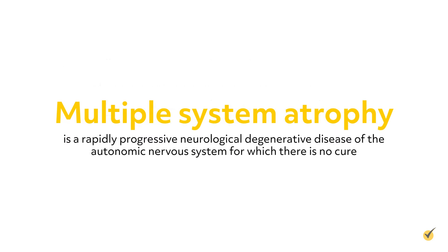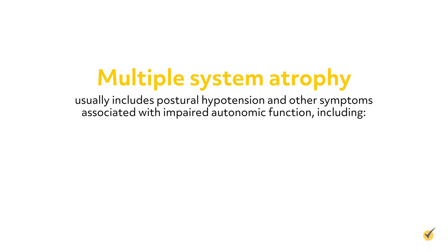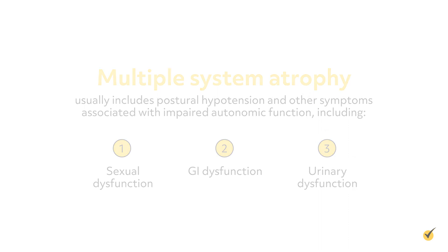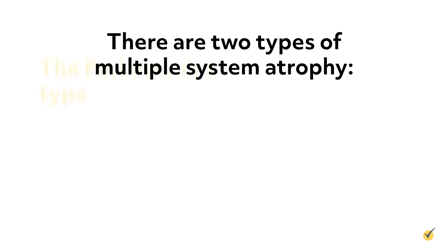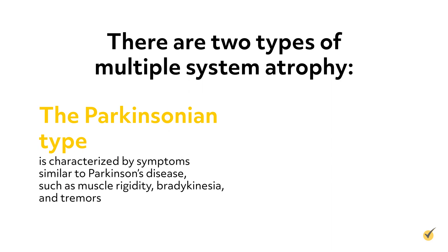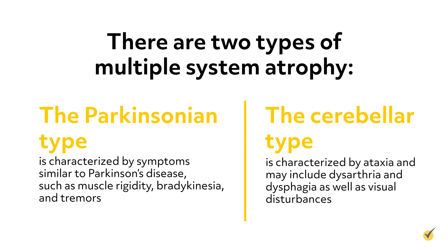Multiple-system atrophy is a rapidly progressive neurological degenerative disease of the autonomic nervous system for which there is no cure. It usually includes postural hypotension and other symptoms associated with impaired autonomic function, including sexual dysfunction, GI dysfunction, and urinary dysfunction. There are two types of multiple-system atrophy. The Parkinsonian type is characterized by symptoms similar to Parkinson's disease, such as muscle rigidity, bradykinesia, and tremors. The cerebellar type is characterized by ataxia and may include dysarthria and dysphagia, as well as visual disturbances.